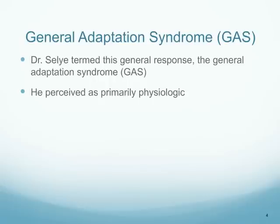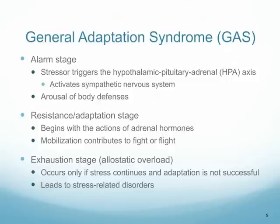He perceived this as being primarily physiologic. He was studying hormones in the body, a physiological process, but we have gone on to find that this same process occurs when we have mental stress as well. In the general adaptation syndrome, there are three main stages: the first is the alarm stage, then the resistance or adaptation stage, and finally the exhaustion stage.